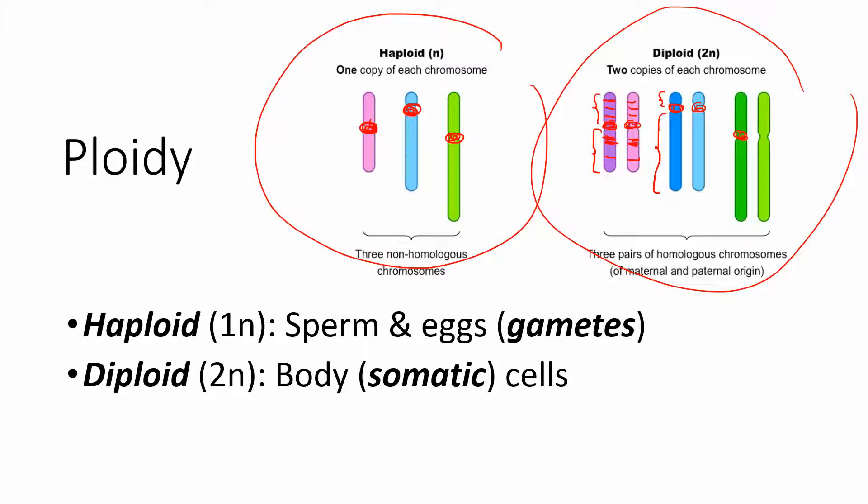You would also notice that homologous pairs have the same banding patterns of genes. In animals, our haploid cells are sperm and egg cells — called gametes — whose main purpose is reproduction. Most of our body cells are diploid; these are called somatic cells and have two sets of chromosomes. For humans, haploid cells are only sperm and egg cells with 23 chromosomes, while all other diploid cells have 46 chromosomes.